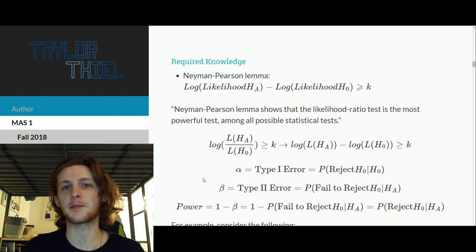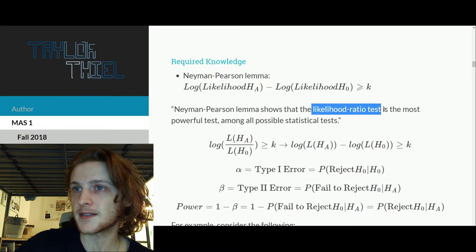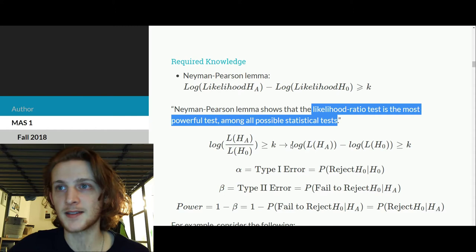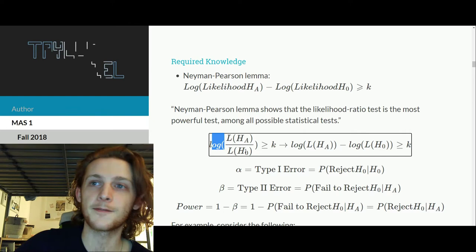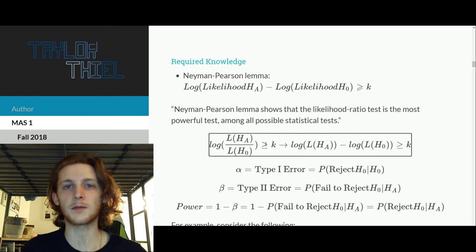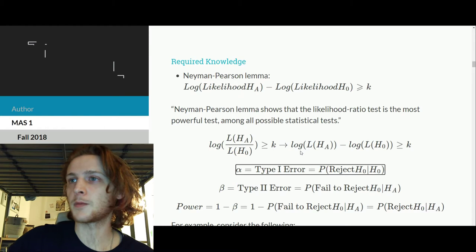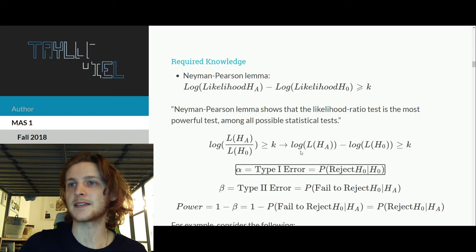The likelihood ratio test is the most powerful test among all possible statistical tests. So the log of the division of the likelihoods of the alternative versus the null hypothesis is greater than or equal to some constant, which is how you define your critical region. So what I just want to walk through in terms of the terms used here is power, and prior to that, alpha, or type 1 error.